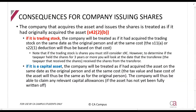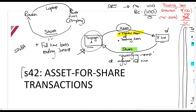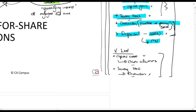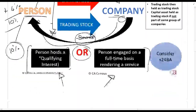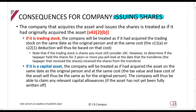Now for the consequences for the company issuing the shares — X Limited. X Limited is issuing shares and receiving an asset, either a capital asset or trading stock, and will claim allowances or a deduction accordingly. The company that acquires the asset and issues the shares is treated as if it originally acquired the asset. If it's trading stock, the company is treated as if it acquired the trading stock on the same date as the original person and at the same cost, so the deduction is based on that cost.